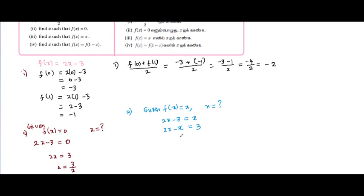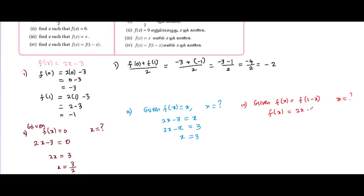So f of x equal to 0 gives x equal to 3 by 2. The value is x equal to 3 over 2.